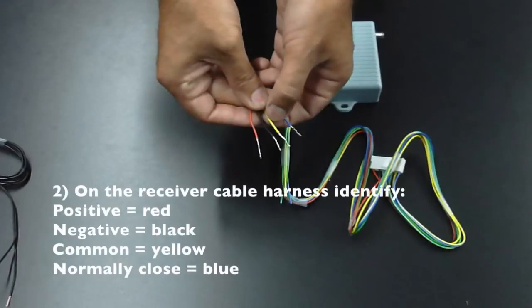On the receiver cable harness, identify your positive, which is going to be red, your negative, which is going to be black, your common, which is your yellow, and your normally closed connection, which is your blue.